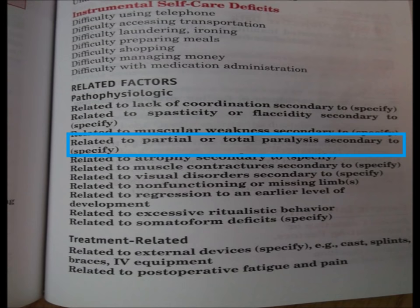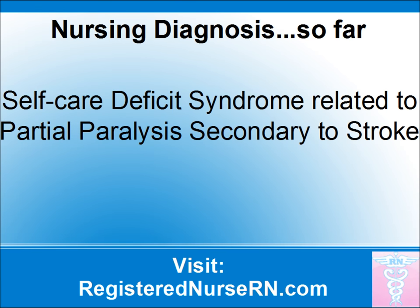Now to get the related-to part of the diagnosis. Again, using your nursing care plan book, look at the part where it says related factor and find the best match factor that relates to your patient. In our patient's case, her related factor is pathophysiological and she would fall into the category related to partial paralysis, secondary to stroke. So far, our nursing diagnosis looks like this: self-care deficit syndrome related to partial paralysis secondary to stroke.